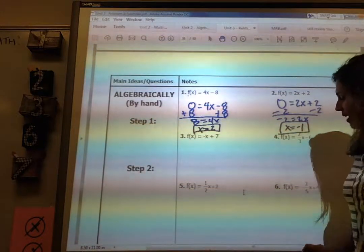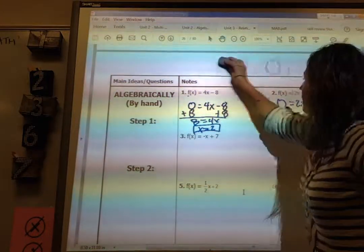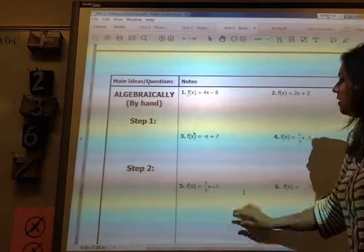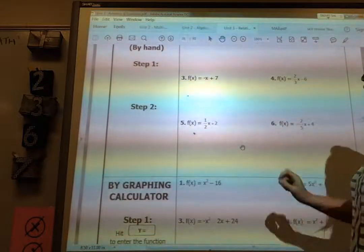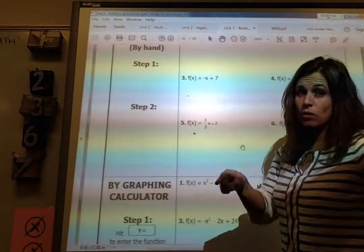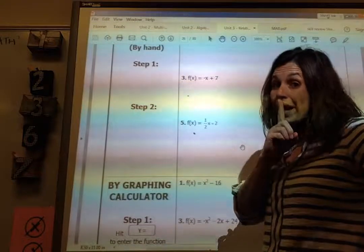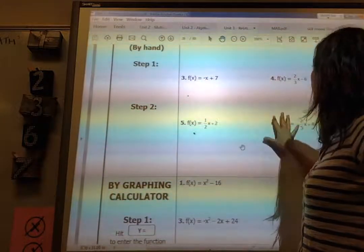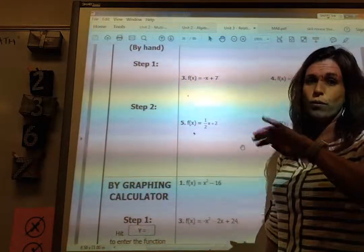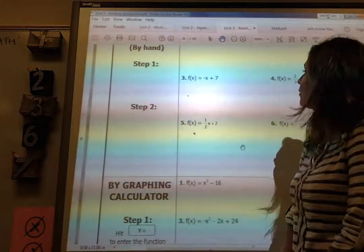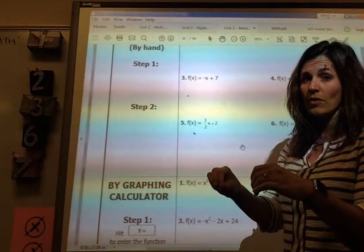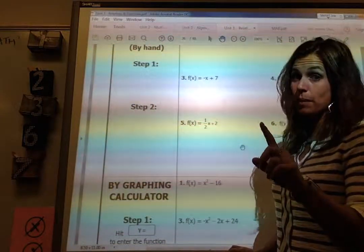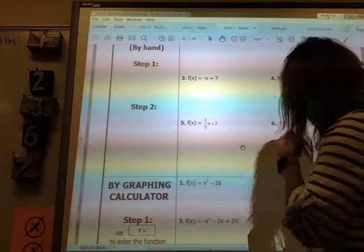So go ahead and take a second to answer 3 through 6. And I'll tell you what, if at your table you work together quietly and everybody gets the same answer, Mrs. Patterson will go around and award you, let's say $100 if you get all four of them correct. And you only get one shot to do it. So, pause this video and then jump back in and I will give you the answers after Mrs. Patterson has come around.